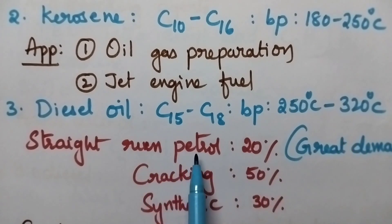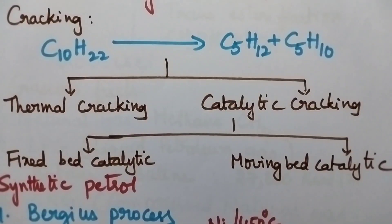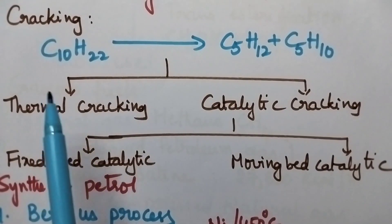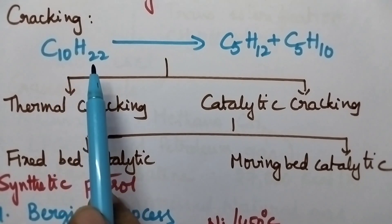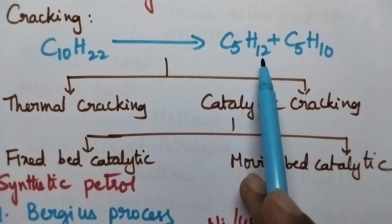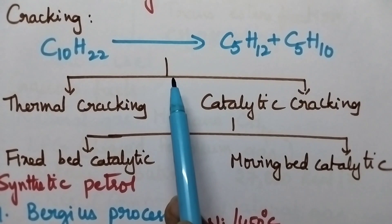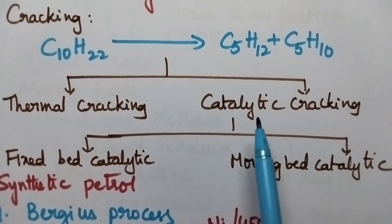Gasoline or petrol is the liquid fuel with greatest demand and directly from the crude oil, we will get only 20% petrol. Through cracking, 50% petrol can be obtained and the synthetic petrol contribution is 30%. Cracking means it is the process of decomposition of high molecular weight hydrocarbons into low molecular weight hydrocarbons. It can be classified into two types: thermal cracking or catalytic cracking.